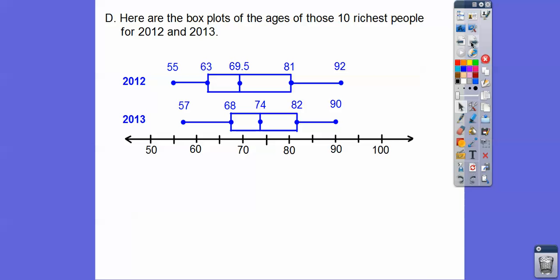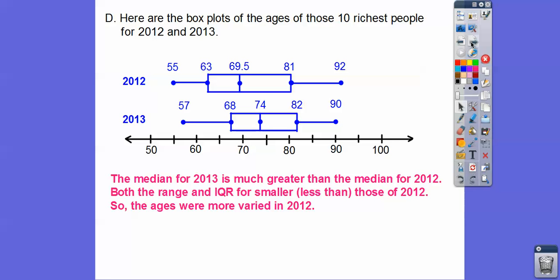This is a different box plot. It's of the same people, but it's of their ages of the 10 richest people. So let's explain their difference. The median for 2013 is definitely a lot higher than it is for 2012. When you're talking billions of dollars, from 69.5 billion to 74 billion, that's a lot of difference. Both of the range and the IQR are smaller, less than those of 2012. In 2013, the range is smaller and the IQR. This box is smaller than this box right here.